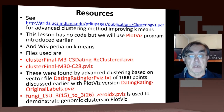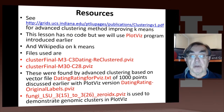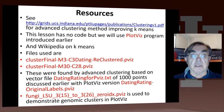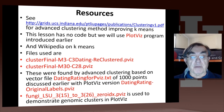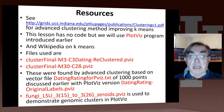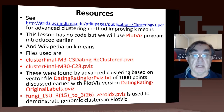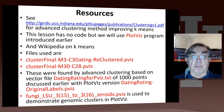There will be one called clusterfinal-m3-c3dating.reclustered — that is a PlotViz file — looking at the clustering of the dating data we got. Remember the thousand points describing the characteristics of possible dates. We cluster that into three clusters. And just to show the difference, we have another file clustering it into 28 clusters — that's m30-c28. We also have the actual input data from Harrington's book, which is the thousand points with the labeling of Harrington.